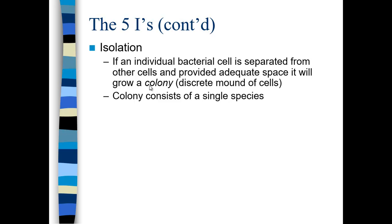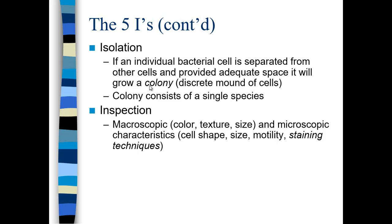Once we have grown our cultures, we want to isolate — separate an individual bacterial cell from the other cells and provide it adequate space so that individual cell will grow into a colony. When a colony comes from an individual cell, it consists of a single species, and now you can isolate that species correctly. After you isolate the species, you want to inspect it. You may look at the color, texture, and size of the colony, examine the microbe under the microscope for cell morphology, shape, size, and motility. You also use staining techniques and biochemical tests to inspect and understand the microbial species further.